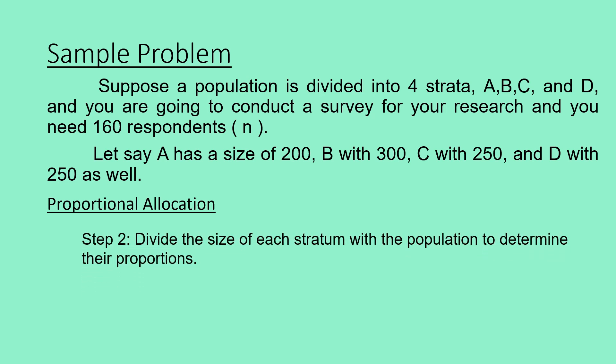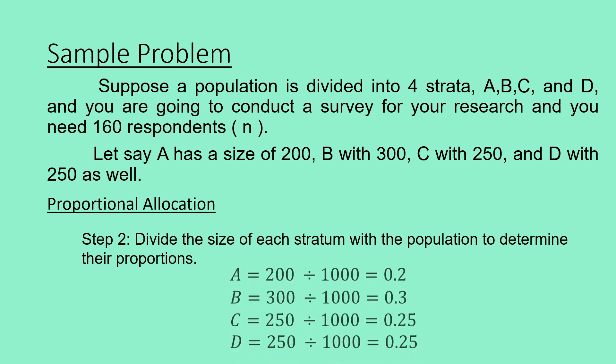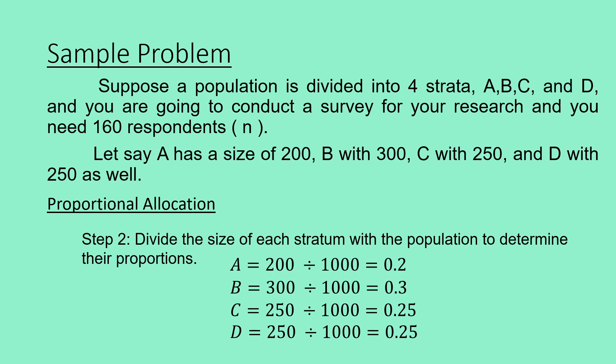Step 2: Divide the size of each stratum by the population to determine their proportions. For A, 200 divided by 1,000 gives 0.2. For B, 300 divided by 1,000 equals 0.3. For C and D, both 250 divided by 1,000 gives 0.25. Notice that the stratum with the greatest size will have the greatest proportion, while the stratum with the smallest size will have the least proportion. To check, add all the proportions and the sum should equal 1.